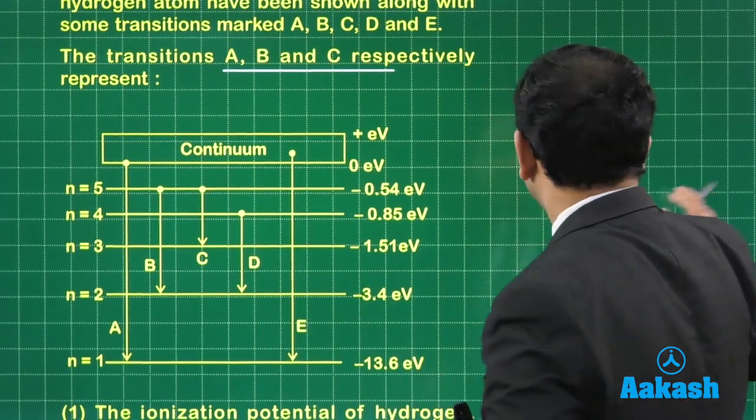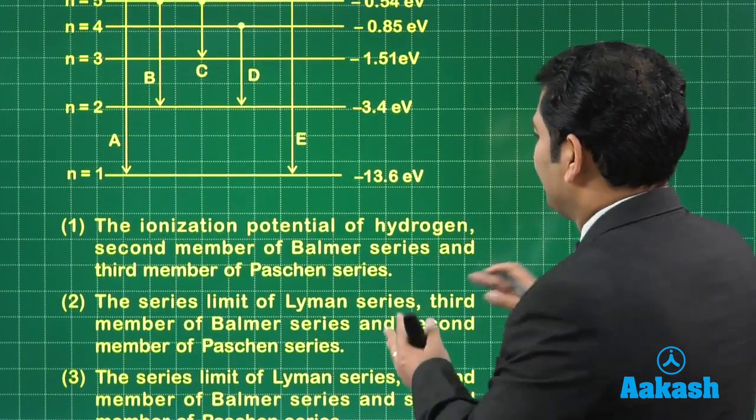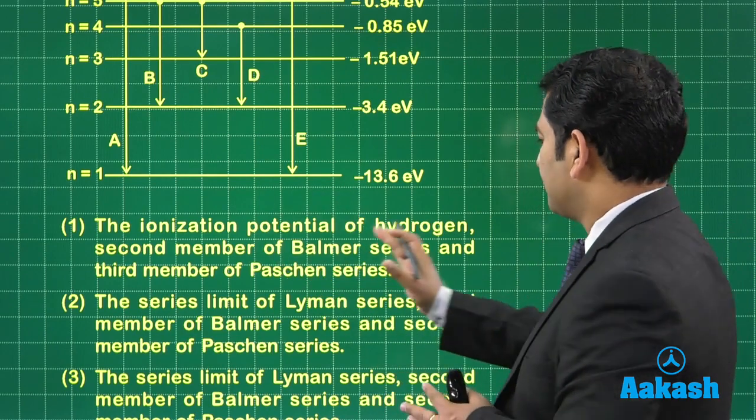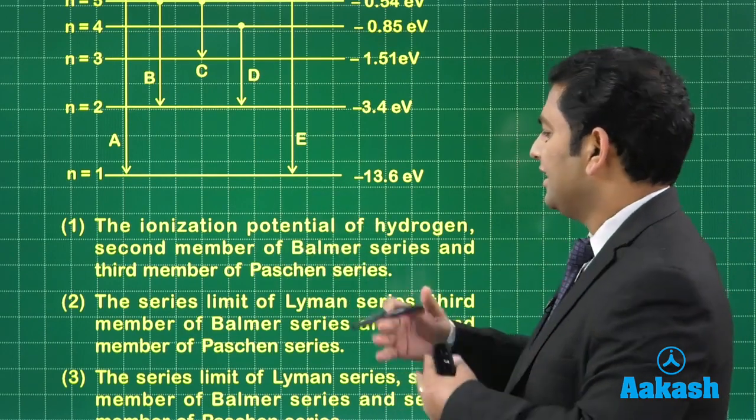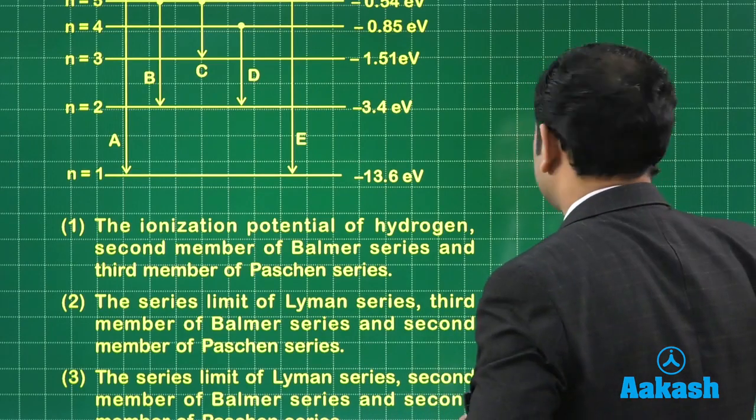So what does the option say? The option says like A, B, C, like A would be ionization potential of hydrogen, B would be second member of Balmer, third member of Paschen. In that way, we need to go. All right. So now, let's just see.